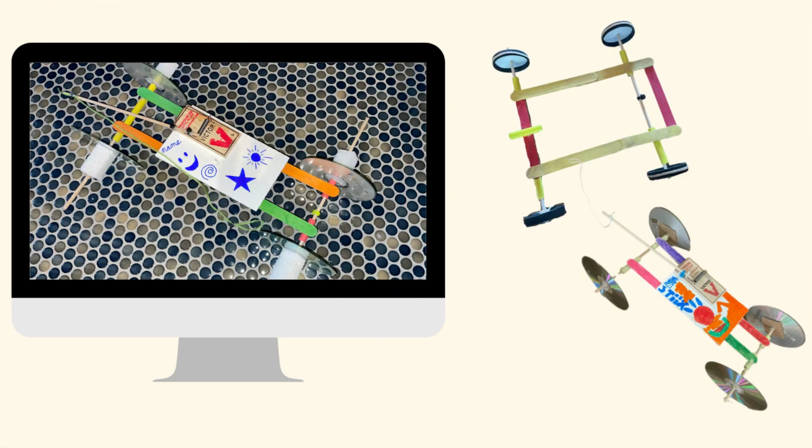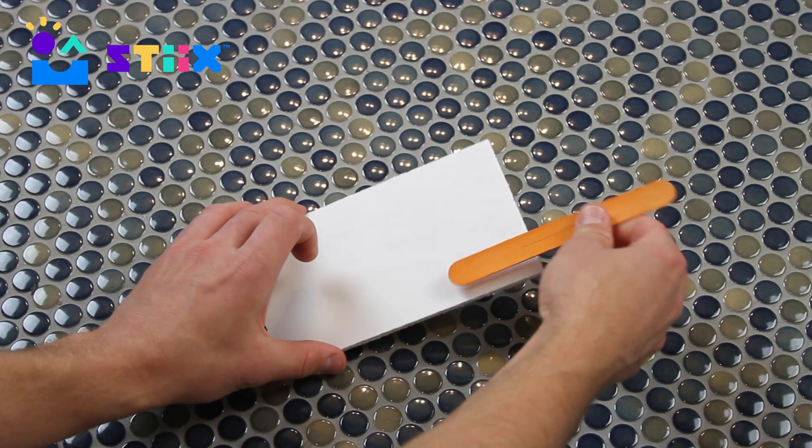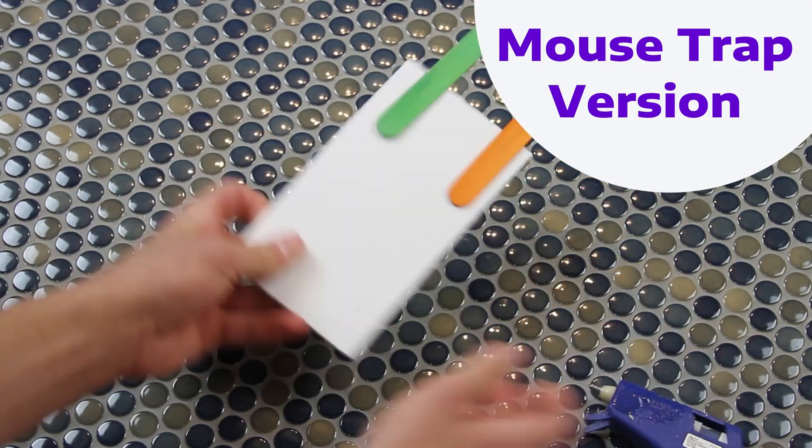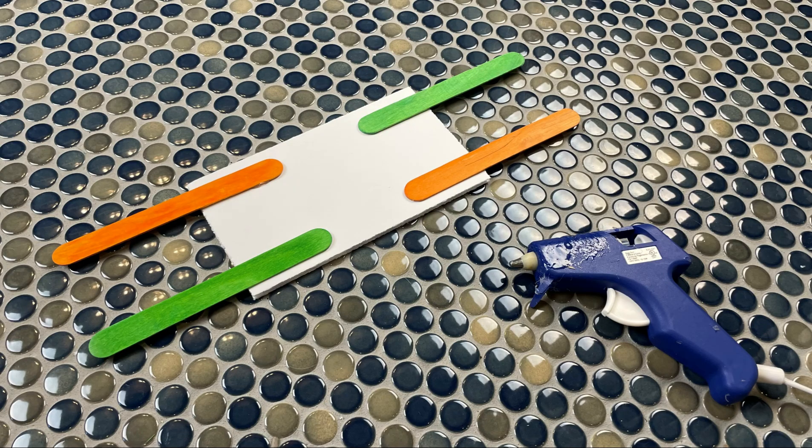This piece of foam serves as the base of your car. The first step is to take some popsicle sticks and glue them to that foam base pointing outwards. Do it on all four sides and try to keep them nice and even.